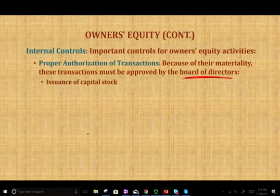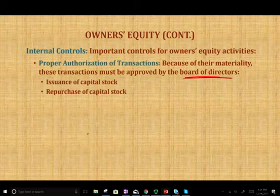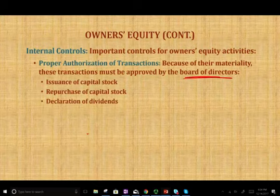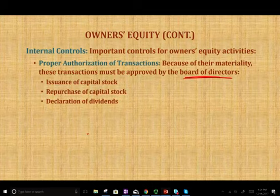Anything that deals with the issuance of stocks, repurchase of capital stock, and declaration of dividends — those three important events get approved by the board of directors. What does that mean to us as auditors? It's easy to audit these accounts because we just review the minutes of the board of directors to see what they decided to do.